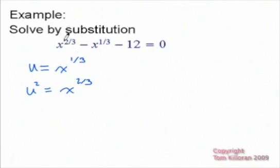So we can use this method, and what happens is wherever I see x to the two-thirds, I'm going to replace it with u squared. Wherever I see x to the one-third, I'm going to replace it with just u, and I have this new equation in terms of u, but we can at least solve it.